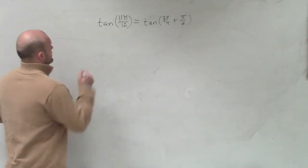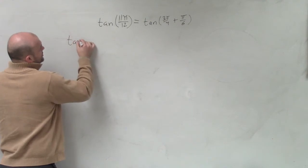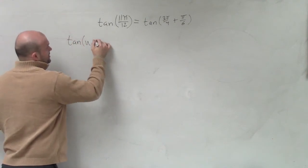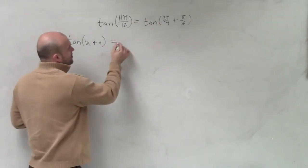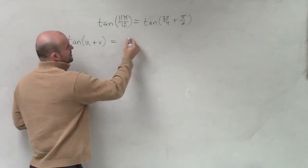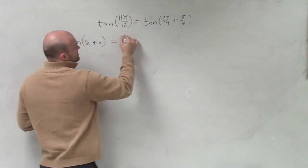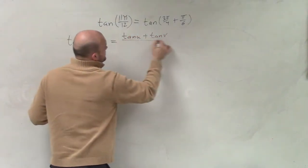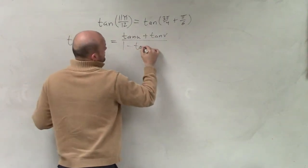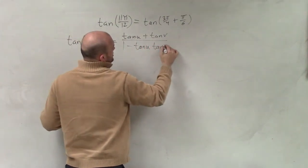So again, we have to make sure we know our formulas. We have to make sure that we at least know the correct form of them. When we have the sum of tangent, that's going to be tangent of u plus the tangent of v divided by 1 minus tangent of u tangent of v.